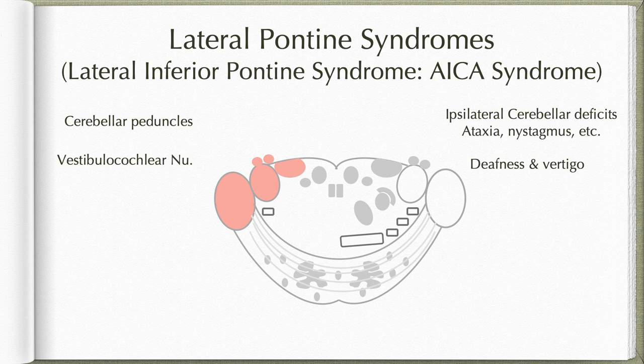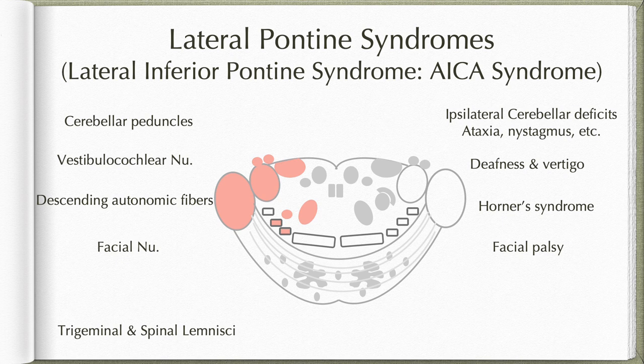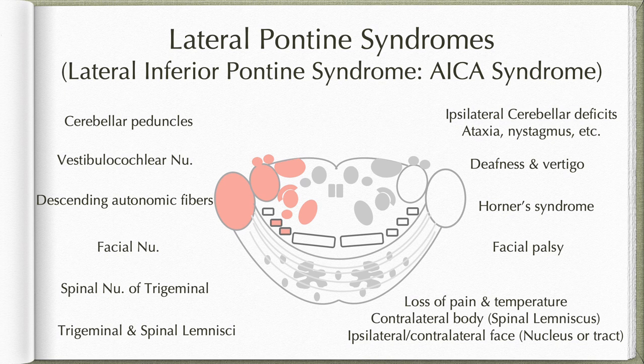Involvement of vestibulocochlear nuclei results in deafness and vertigo. Involvement of descending autonomic fibers results in Horner syndrome features. The facial nucleus is also involved in lateral pontine syndromes, resulting in same-sided facial palsy. Involvement of trigeminal and spinal lemnisci, and possibly the medial lemniscus, along with the spinal nucleus of the trigeminal nerve, produces further sensory deficits.